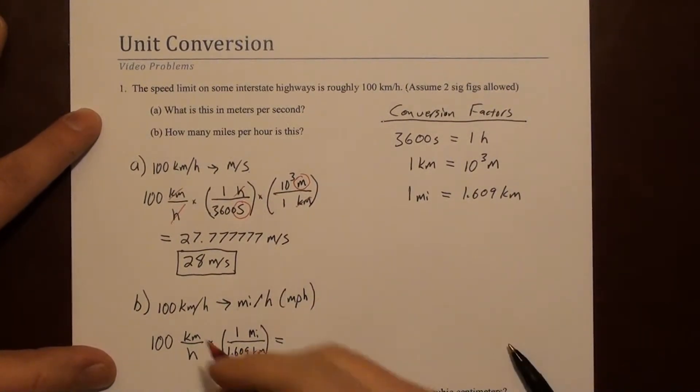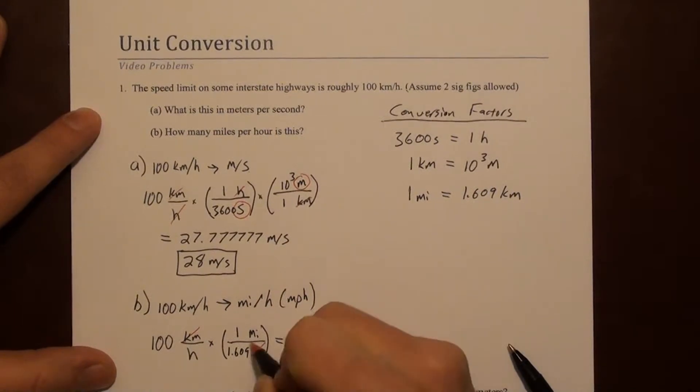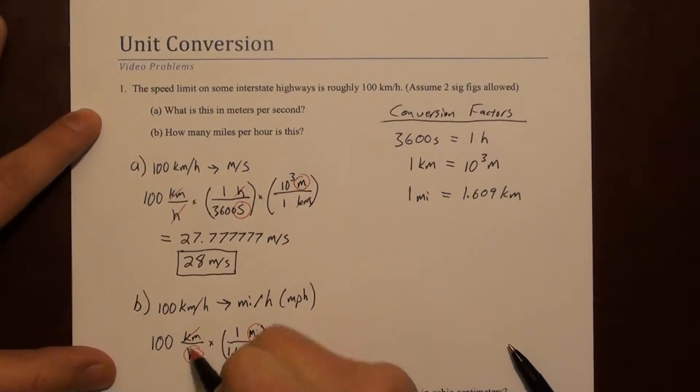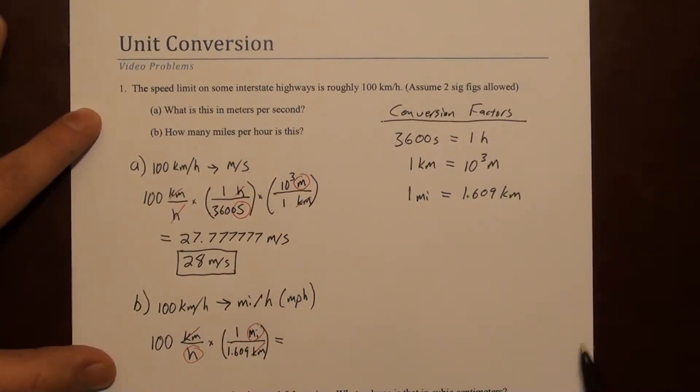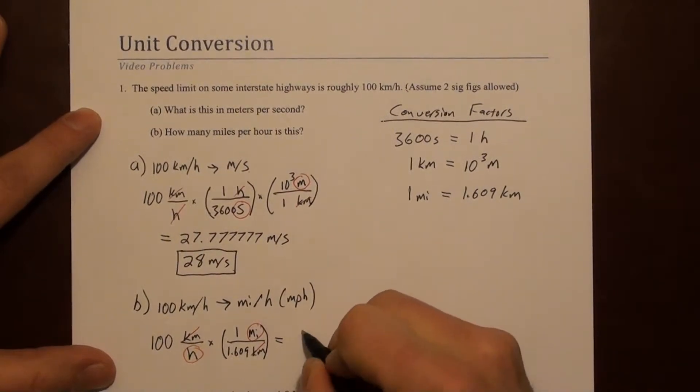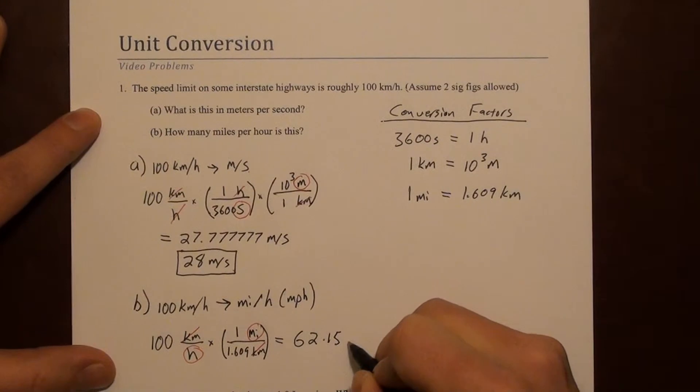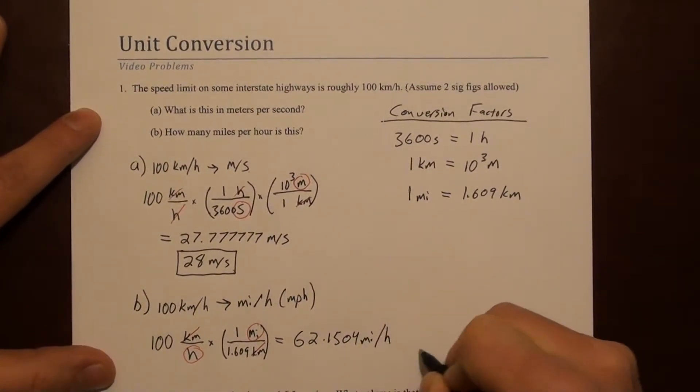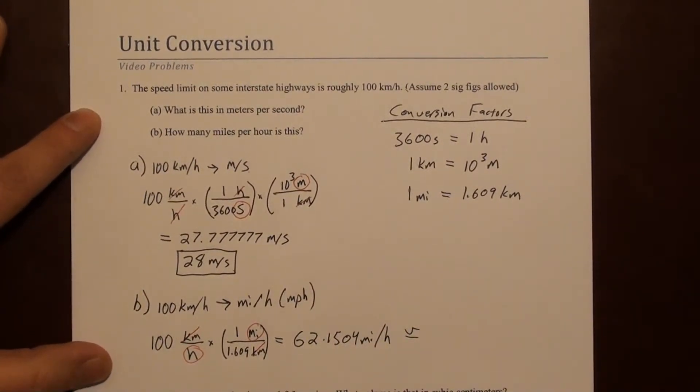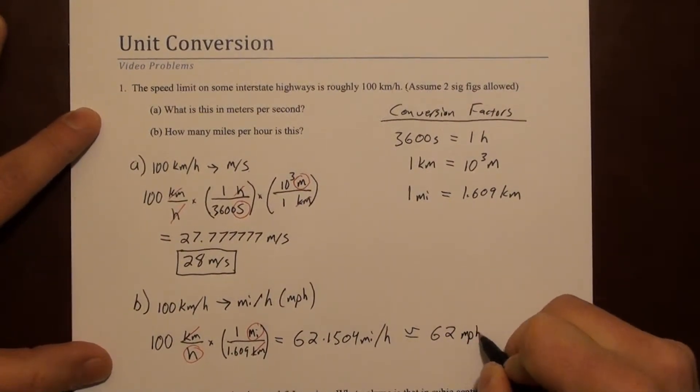We'll check the units quickly. Kilometers and kilometers cancel. We've got miles per hour. Looks like that's correct. And the number we get for this is 62.1504 miles per hour. And if we round that to two significant figures, that's 62 miles per hour.